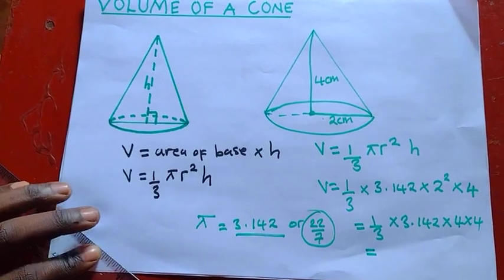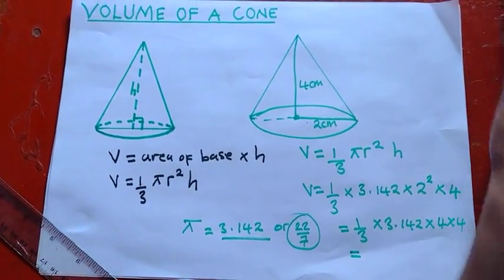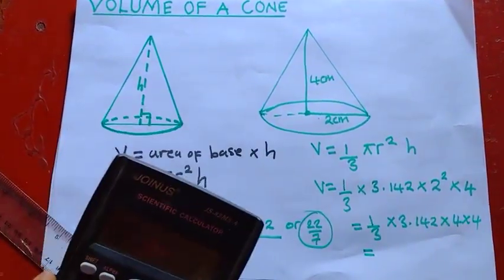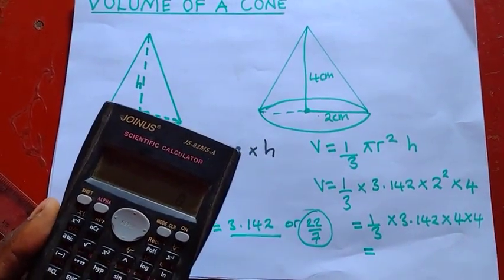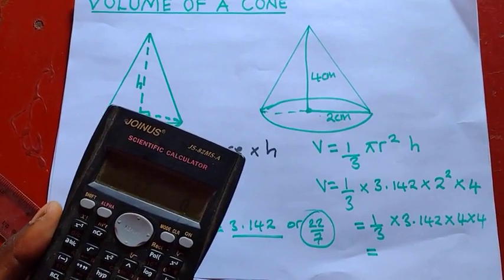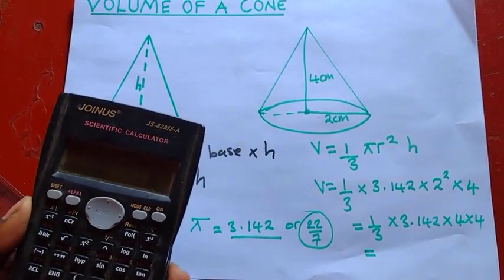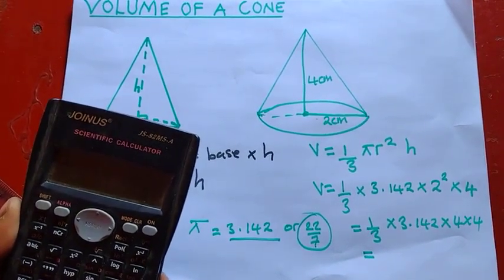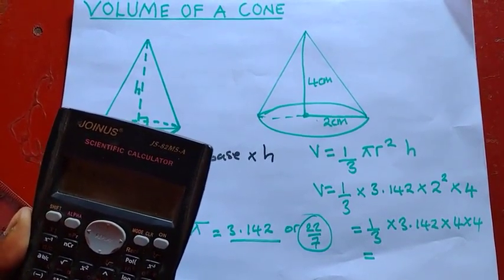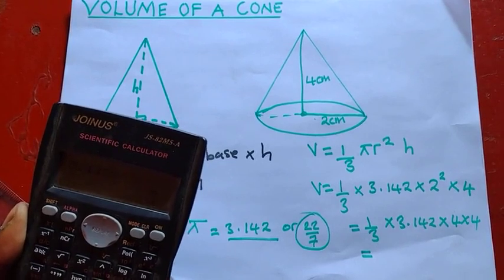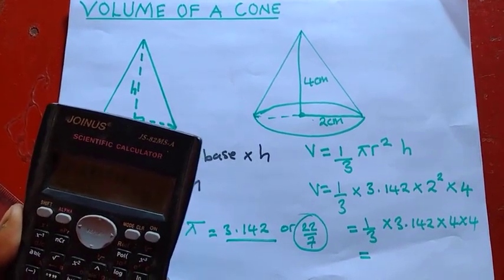So just say 1 over 3 times 3.142 times 2 squared is 4 times 4. Equal to. So this is paper 2, so you can just punch everything on the calculator. As I'm punching, ensure that you are also punching so that you get the same value, okay?